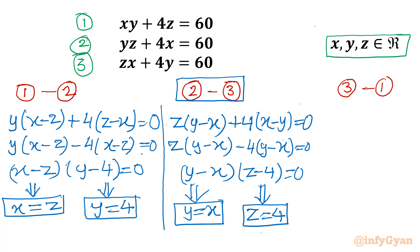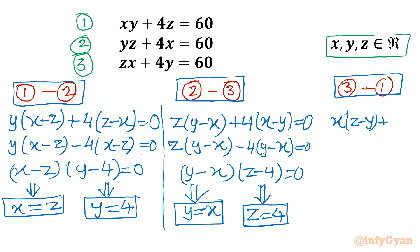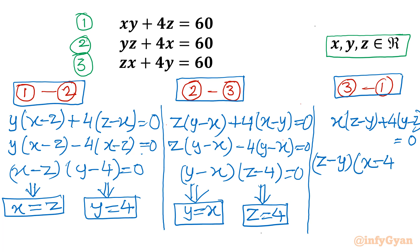Now the third operation: equation 3 minus equation 1. x is common giving x times z minus y, then 4 common giving y minus z, right-hand side is 0. In a similar way I can write: z minus y times x minus 4 equals 0. Conclusion: either z equals y, or from the second bracket x equals 4.